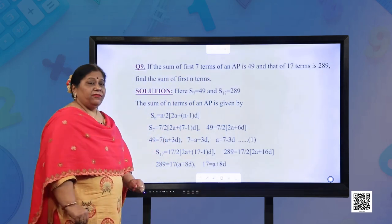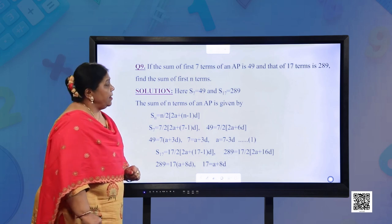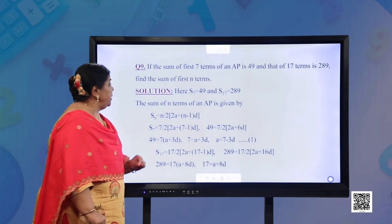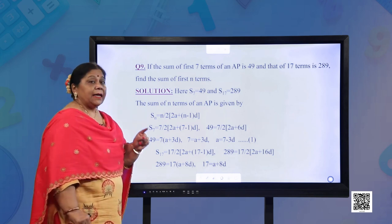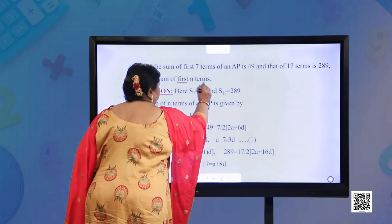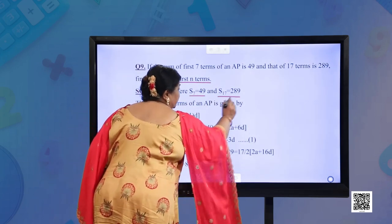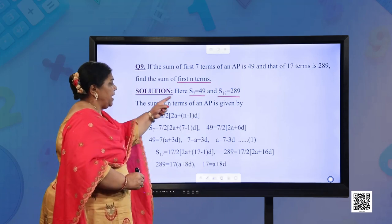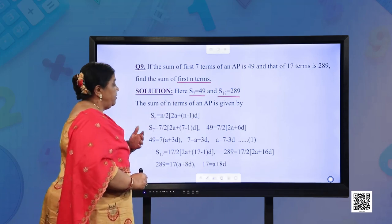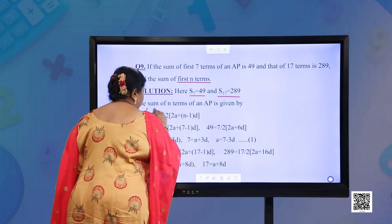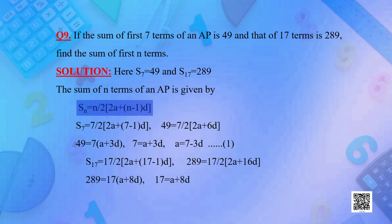If the sum of first 7 terms of an AP is 49 and that of 17 terms is 289, find the sum of first n terms. Here S7 = 49 and S17 = 289. Using Sn = n/2 × (2A + (n−1)D): S7 = 7/2 × (2A + 6D), which gives 49 = 7(A + 3D), so 7 = A + 3D (equation 1).